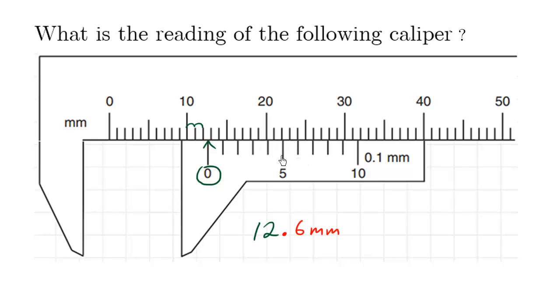So by looking at the pattern, you can finalize which reading it is. This is zero, one, two, three, four, five, six. So the final answer is 12.6 millimeters.